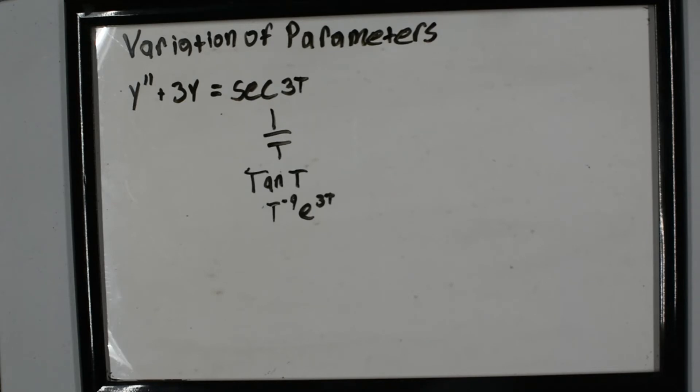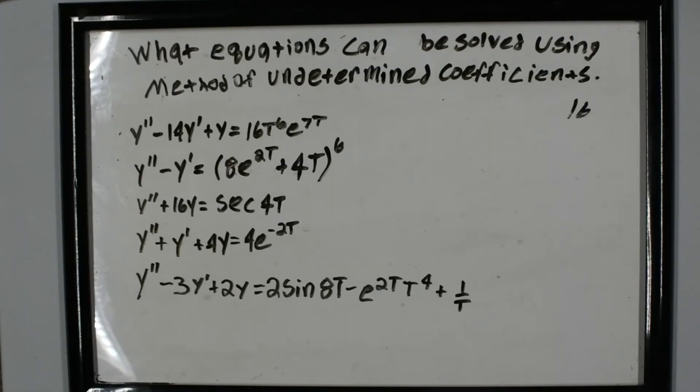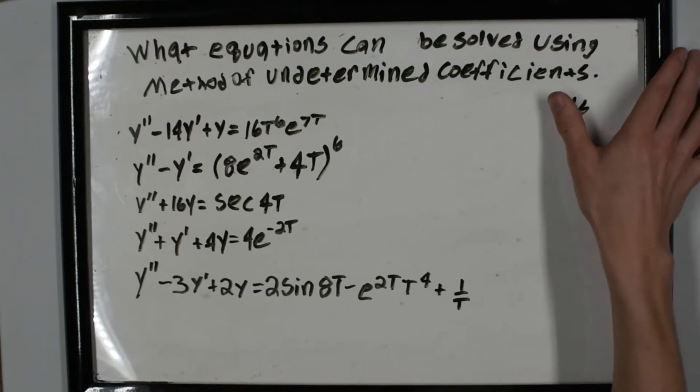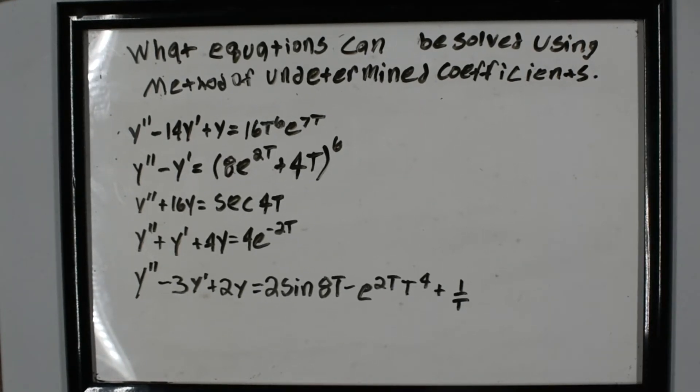Let's now do a quick exercise. The goal is identifying equations that can be solved using the method of undetermined coefficients. If you'll remember, variation of parameters is kind of a catch-all. You can use it for pretty much any equation, but it's a lot easier to use undetermined coefficients when you can.